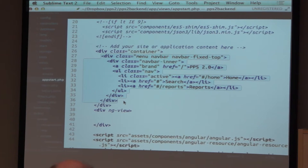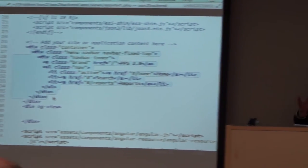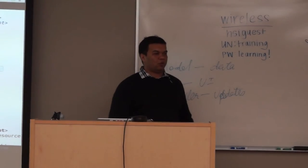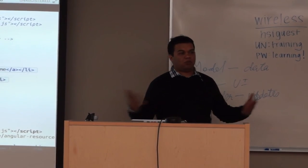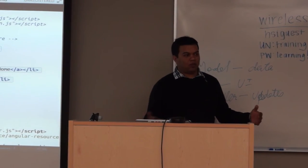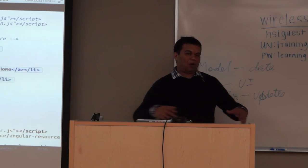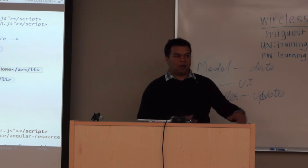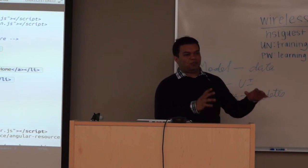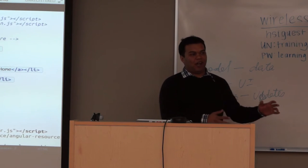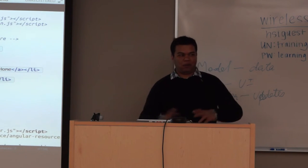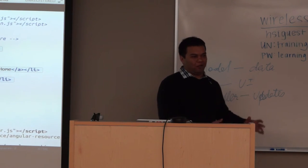One good thing you can do is have only a certain part of an application work with Angular, and the rest of your application can be something else. You could have part of the application in Backbone and part in Angular, and Angular will be fine with that — as long as you don't invade the ng namespace.